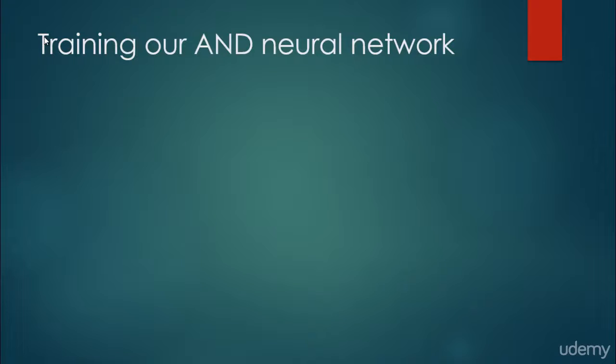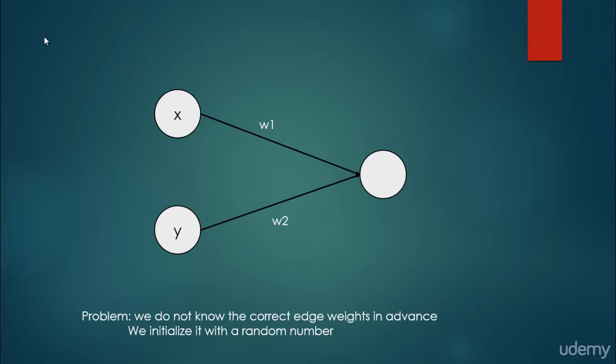In this video we are going to talk about how to train our neural network we have been constructing so far. In the previous videos we have seen how this neural network can achieve what we are looking for, which is to construct a neural network that can solve the AND logical gate problem.